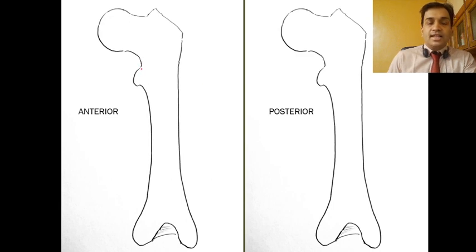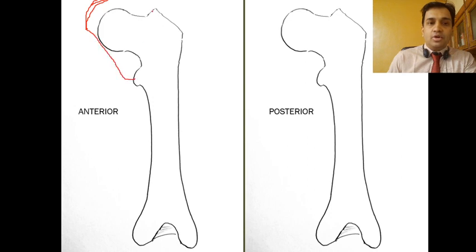The hip joint capsule proximally is attached to the acetabular labrum, and distally it attaches to the intertrochanteric line on the anterior aspect of the proximal femur, and to the intertrochanteric crest on the posterior aspect.